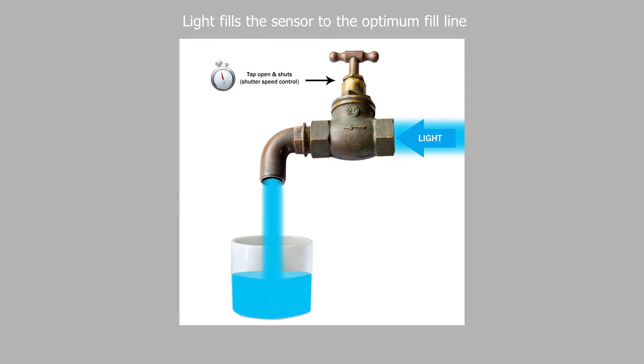Light fills the sensor to the optimum fill line. The light meter indicator is our guide. When the light meter indicator is on zero, we have good exposure.